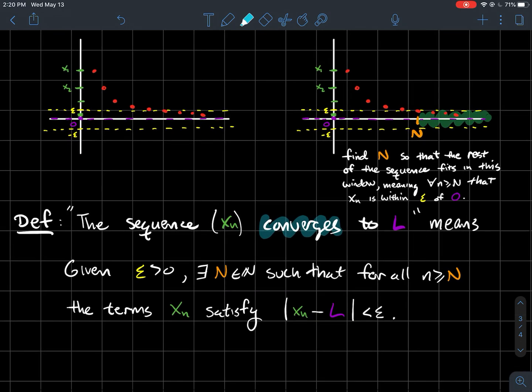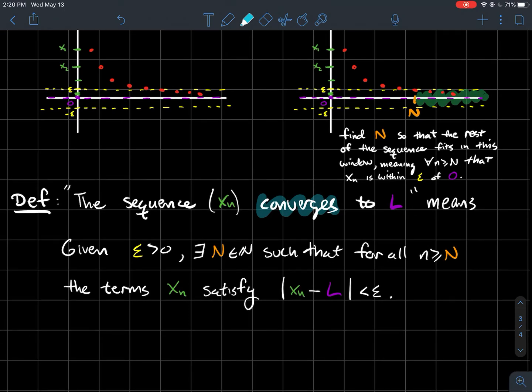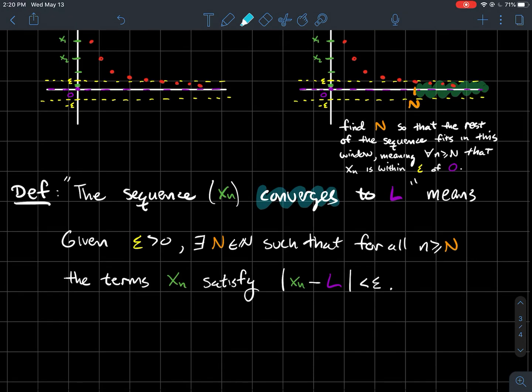And that's really the big idea for how we're going to define what it means for a sequence to converge to a number L. So what's the definition we're going to be working with? Given a positive number epsilon, there exists a natural number N such that for all indices little n larger than or equal to that special N, the terms xₙ satisfy this distance requirement. In other words, the distance between the rest of your terms and the supposed limit is smaller than that epsilon.